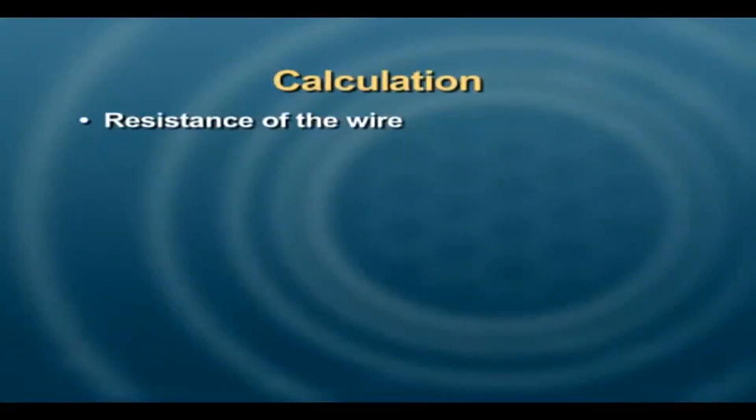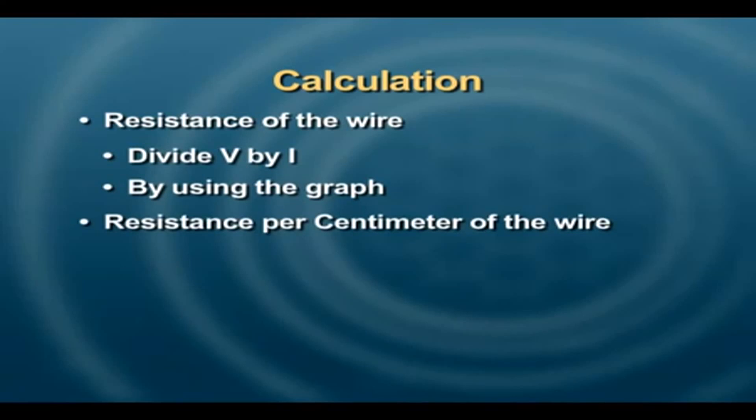The resistance of the wire which you will get by two means: one by dividing the value of voltage with current, and the second would be by using the graph. So in both ways you can find the value of resistance, then calculate the resistance per centimeter.